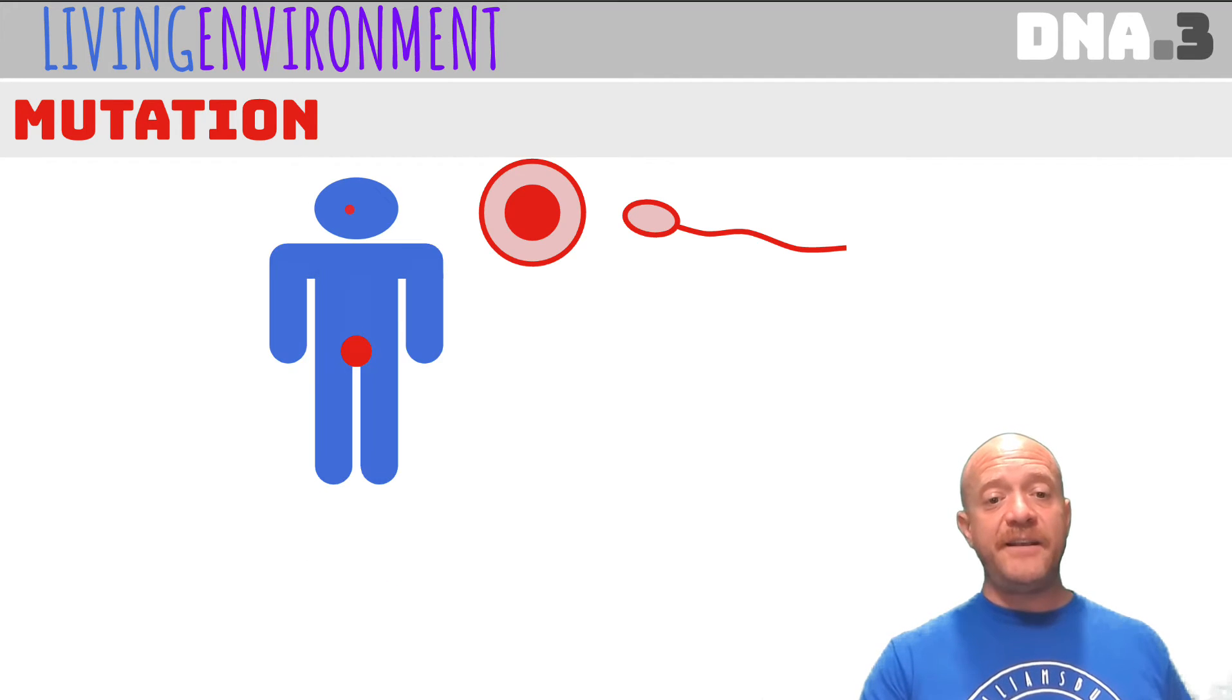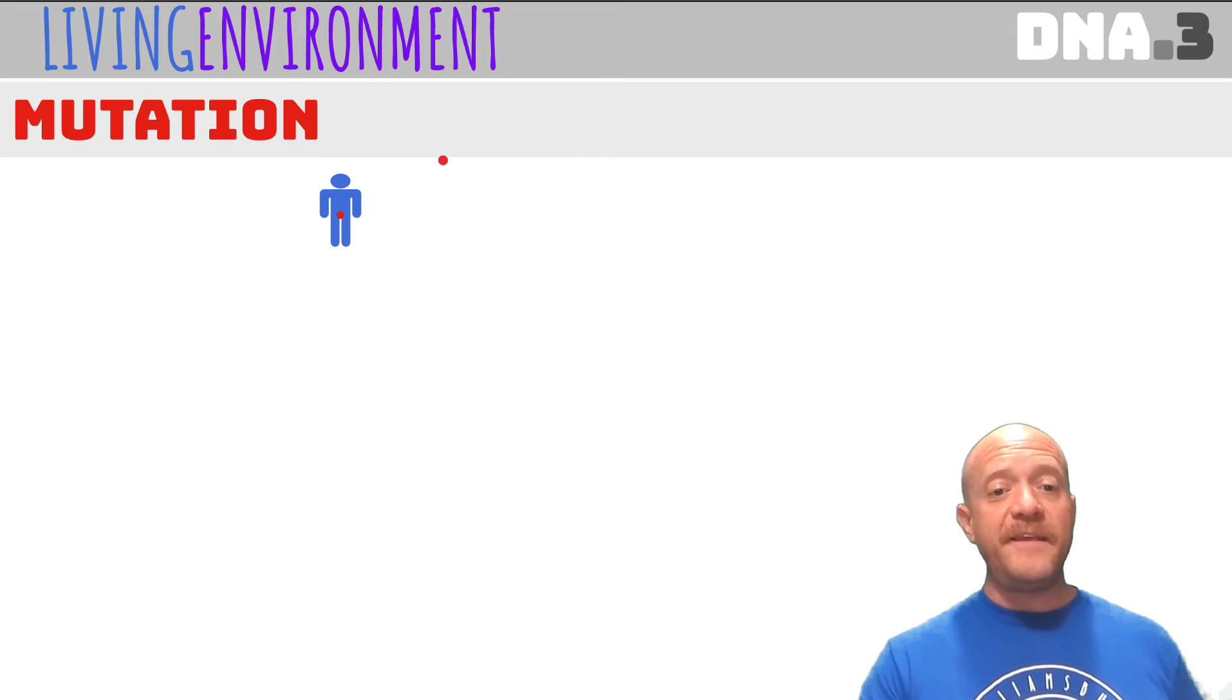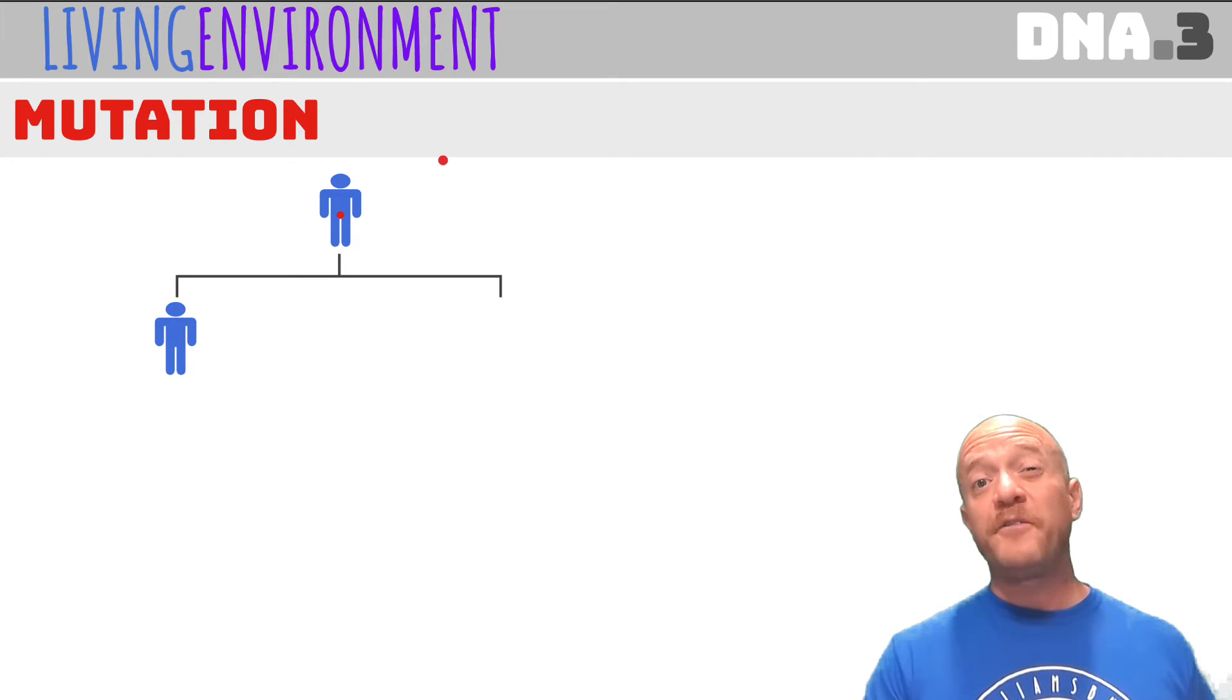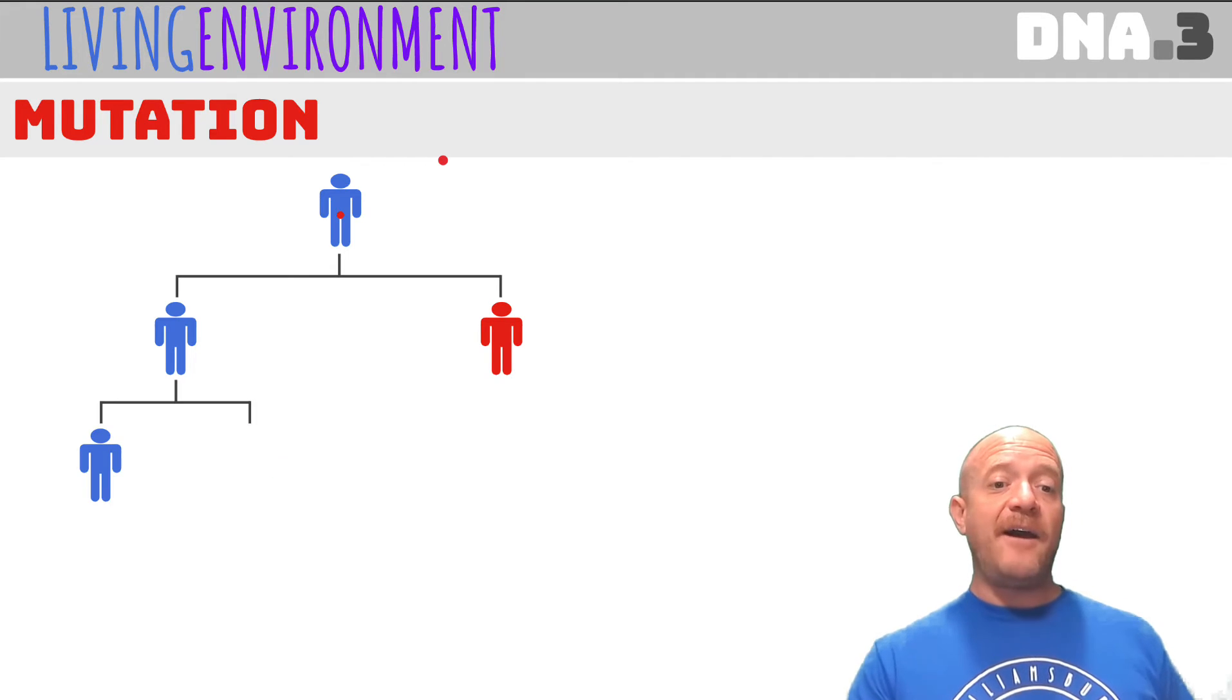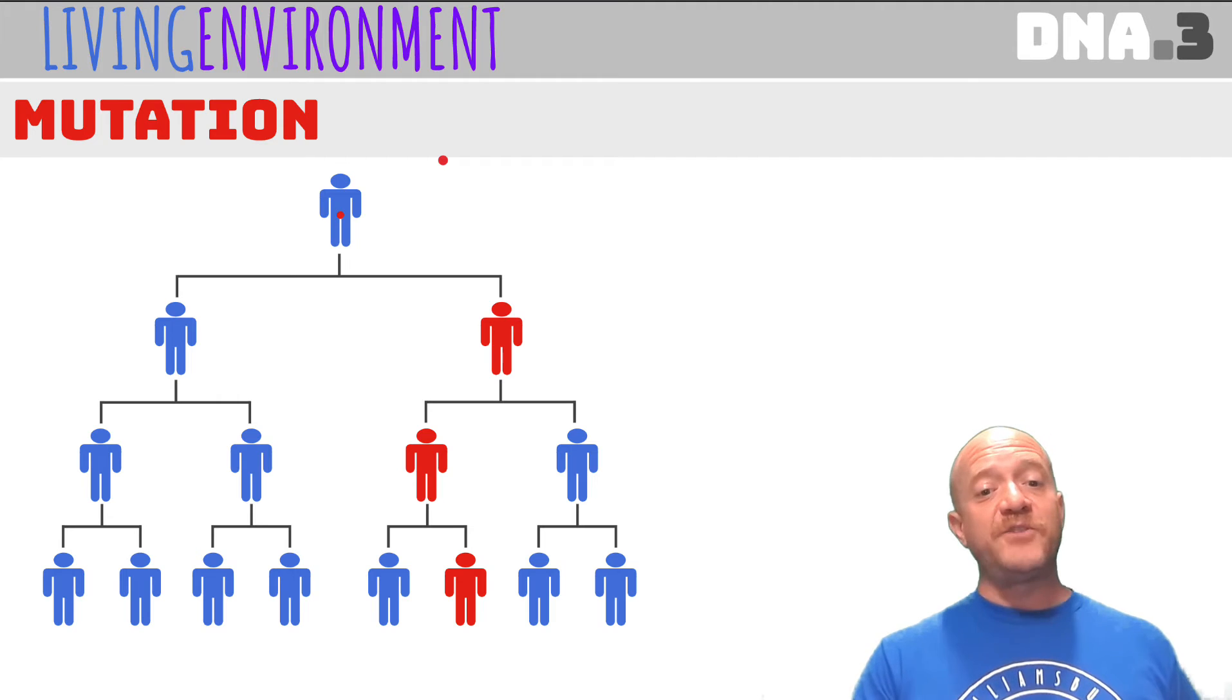So let's say we had a mutation in sperm or eggs. Now, when this person has an offspring, some of them might be born without the mutation. Some of them might be born with the mutation. Now, the ones that were born without the mutation are going to have children without the mutation. The one born with the mutation might have children born with or without that mutation. And so on and so forth.